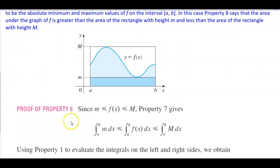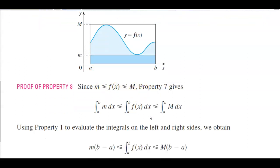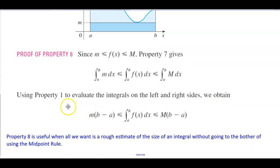Here is the proof for property 8. Since we know that the minimum is less than or equal to f(x), which is less than or equal to the maximum, property 7 gives us the following: the integral from a to b of m dx is less than or equal to the integral, which is less than or equal to the integral from a to b of the maximum. Using property 1 to evaluate the integrals on the left and right sides, we obtain m times (b minus a), which is less than or equal to the integral, and the constant capital M times (b minus a).